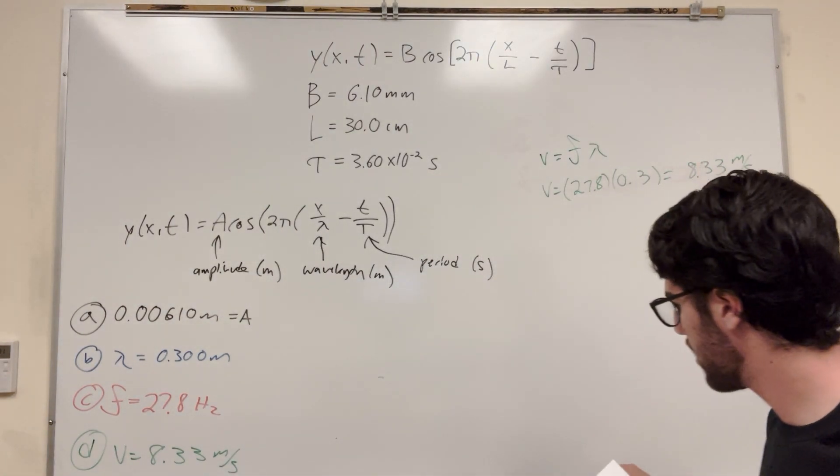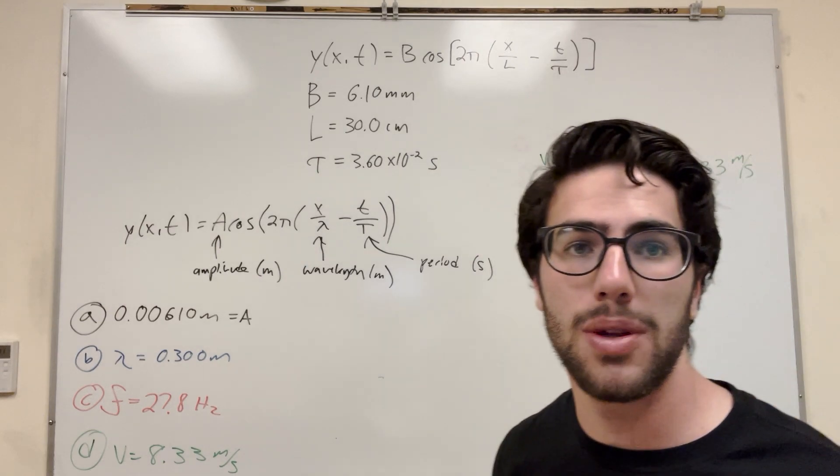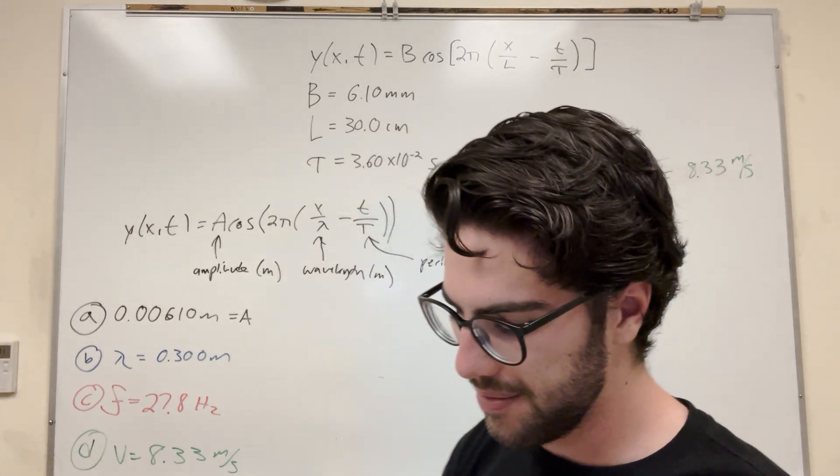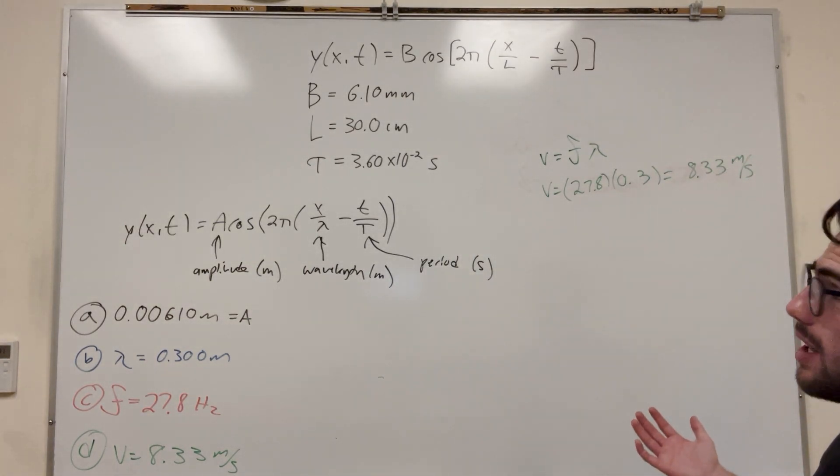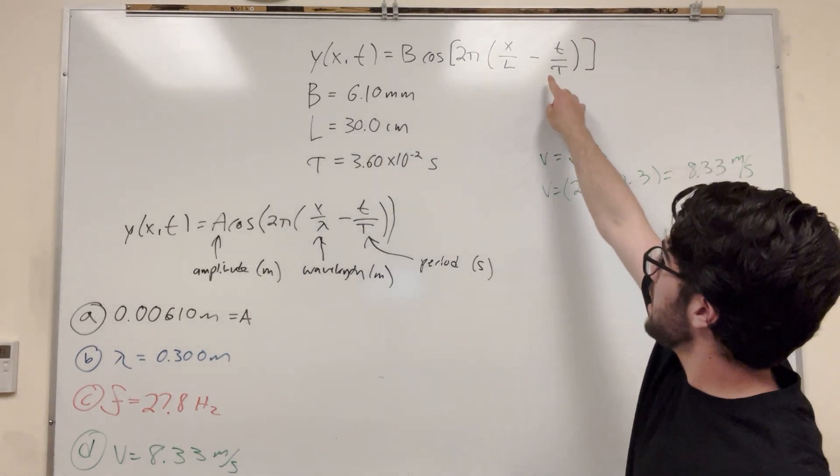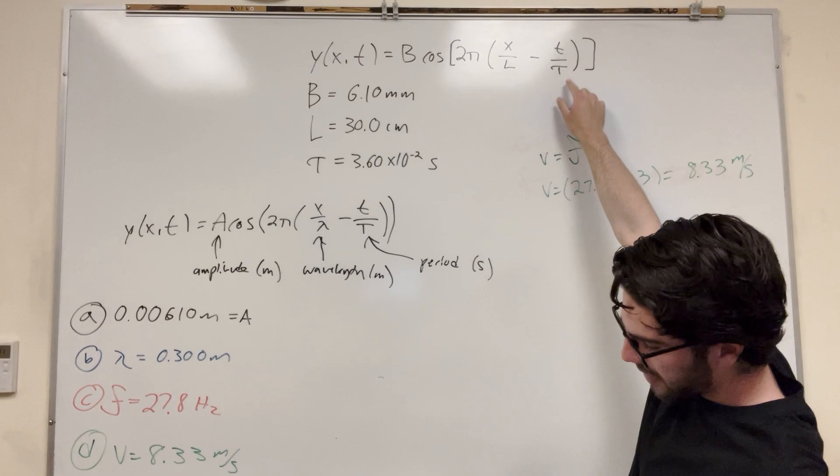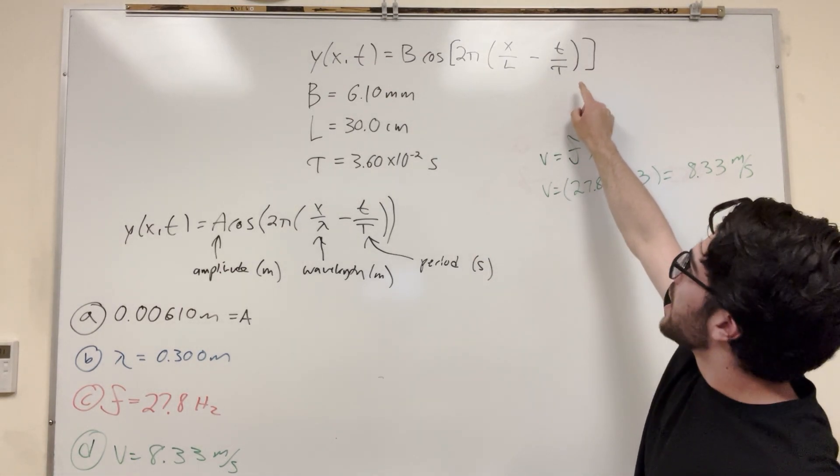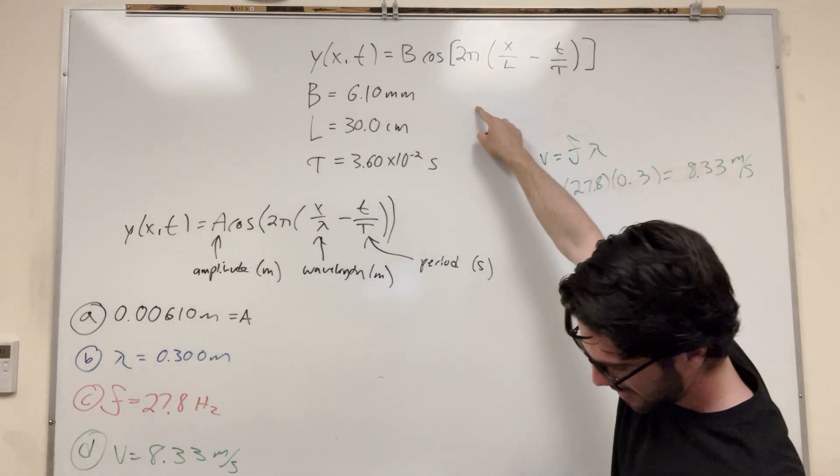What's last? I guess we have E. E is asking to determine the wave's direction of propagation, right? So to do this, basically you just need to look at this formula, right? So in this case, if the t, the value going to t, if there's a negative sign here, it's going to be going in the positive x direction. If it's a positive sign, it's going to be going in the negative x direction. That's just something you kind of need to know.